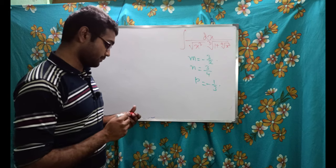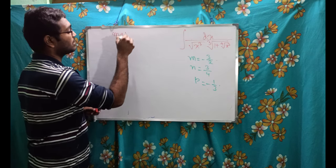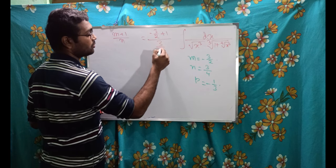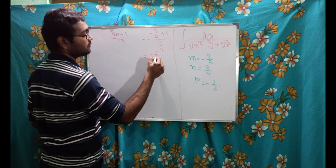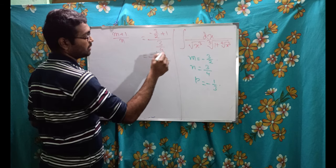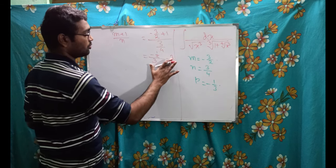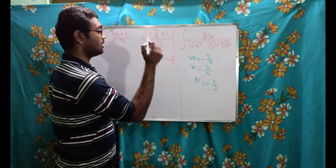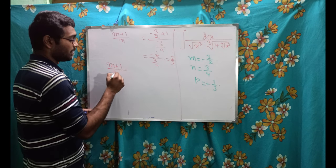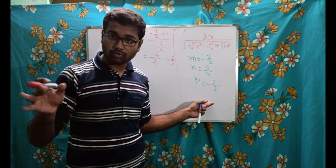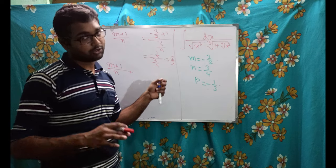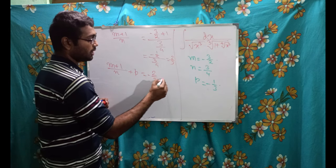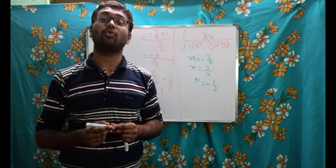Checking condition 1: p = −1/3 is not a whole number, so it fails. Checking condition 2: (m+1)/n = (−3/2 + 1)/(3/4) = (−1/2)/(3/4) = −2/3, which is not an integer, so condition 2 also fails. Moving to condition 3: (m+1)/n + p = −2/3 + (−1/3) = −1, which is an integer. So condition 3 applies and we can integrate.